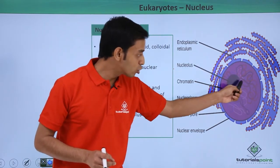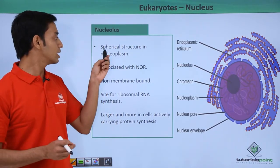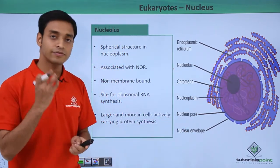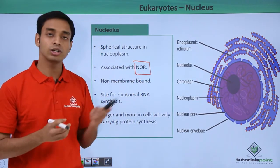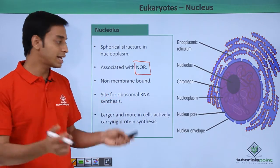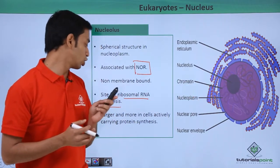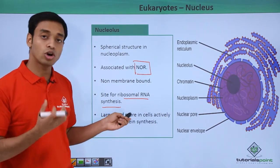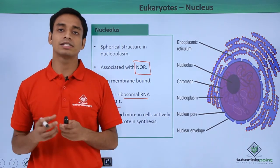The nucleoplasm contains the nucleolus and the chromatin network. The nucleolus is a spherical structure present inside the nucleoplasm, associated with NOR (nucleolar organizing regions) of the nuclear chromosomes. These are non-membrane bound structures and are the specific sites for the synthesis of ribosomal RNA (rRNA). The number and size of the nucleolus is larger in cells that are actively synthesizing proteins.